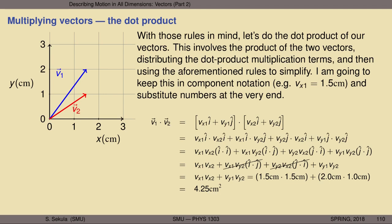Notice what happens if instead you compute v1 dotted into itself — v1 dot v1. You wind up with vx1 times vx1 plus vy1 times vy1, which is vx1 squared plus vy1 squared. Doesn't that sound familiar? That's the Pythagorean theorem — the sum of the squares of the sides of the triangle that make up this vector — and that equals the square of the length of the vector, the hypotenuse. So the dot product is an elaborate way of recovering the Pythagorean theorem, but from vectors rather than plain numbers.